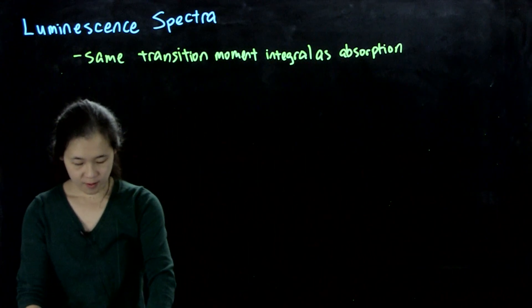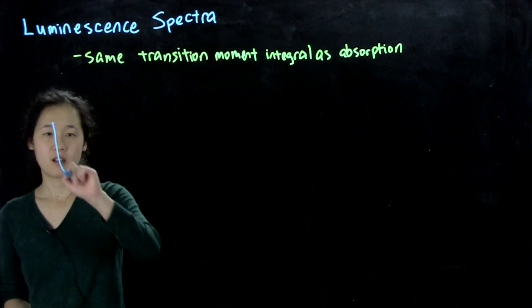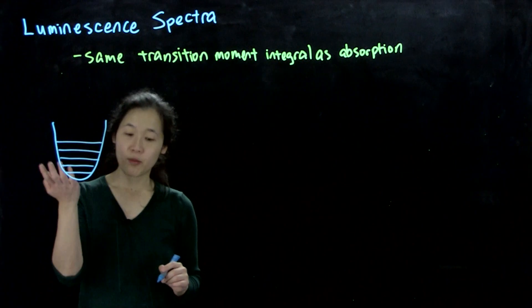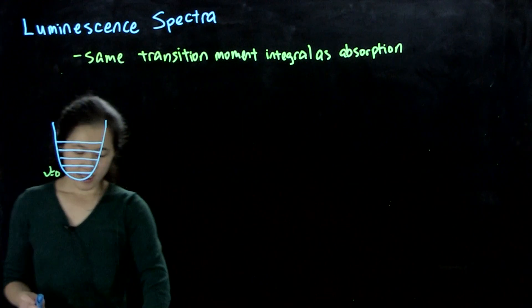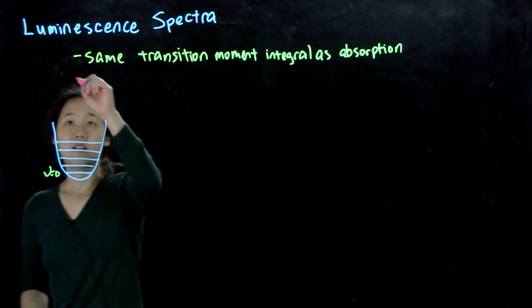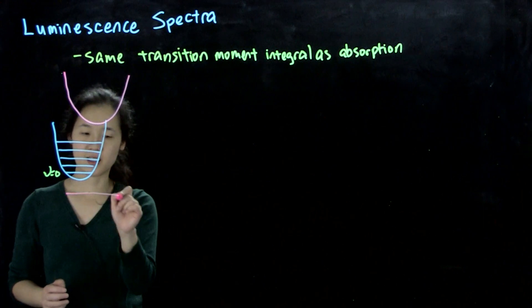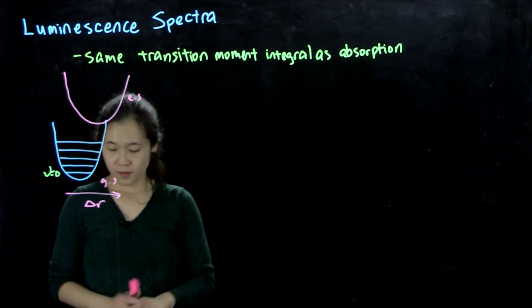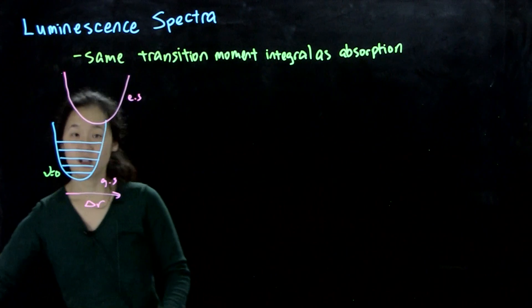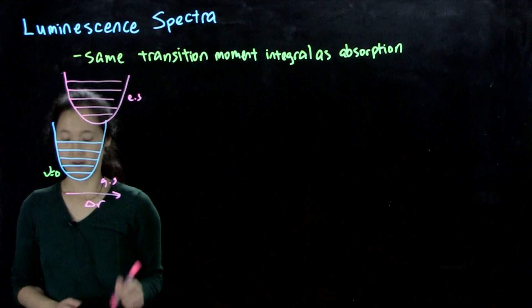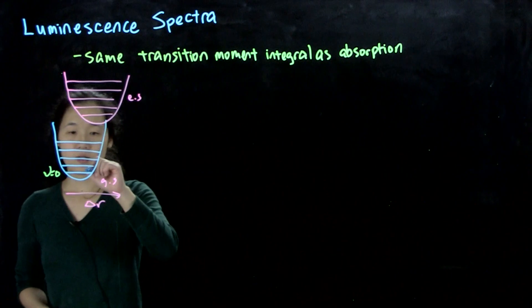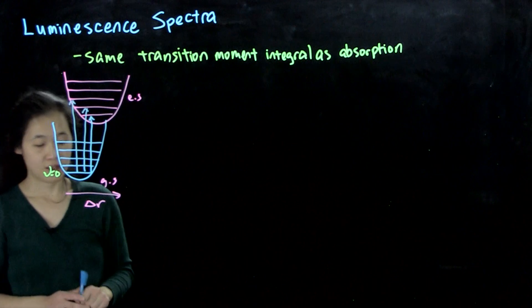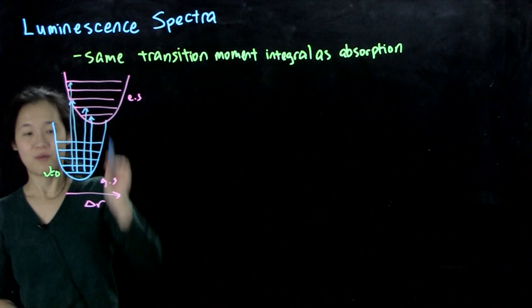Let's talk about what we'll typically see. Here again is our ground state with all our vibrational levels. At low temperatures, we start off at the lowest vibrational level. We have our excited state, which might have some nuclear displacement — the x-axis is nuclear displacement, y-axis is energy. When we absorb light, we're going from nu equals zero to our excited state levels. We can go to nu equals zero, nu equals one, and all of these absorption levels.